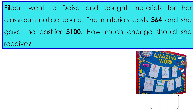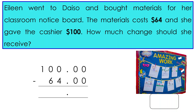First, write the numbers to be subtracted. In this case, it is $100 minus $64. Make sure the decimal points of the two numbers are aligned as shown.